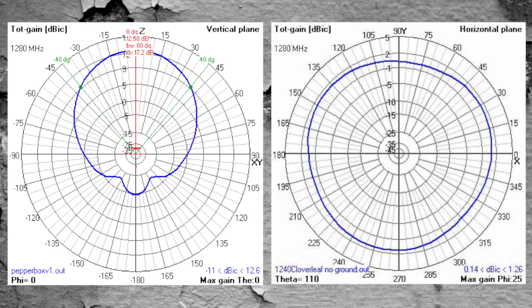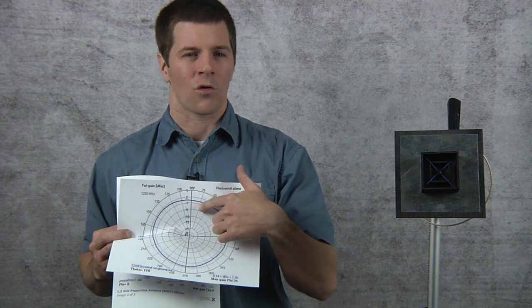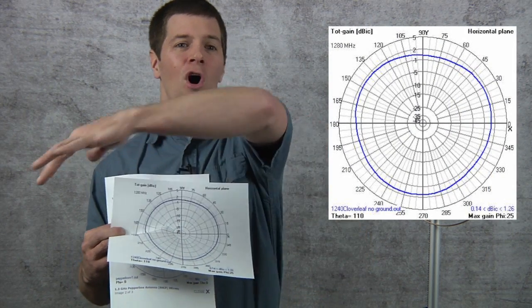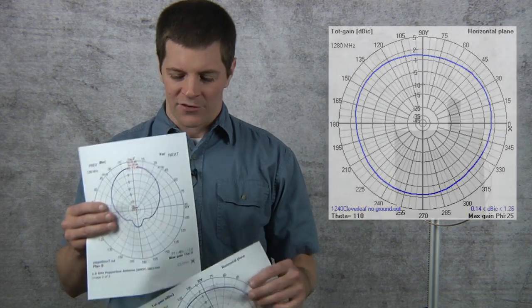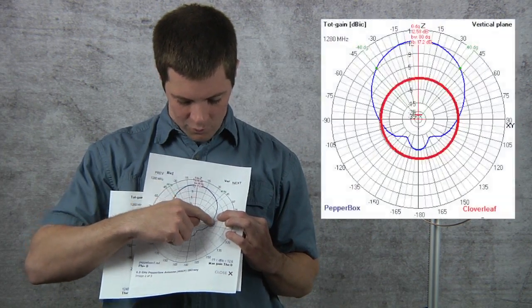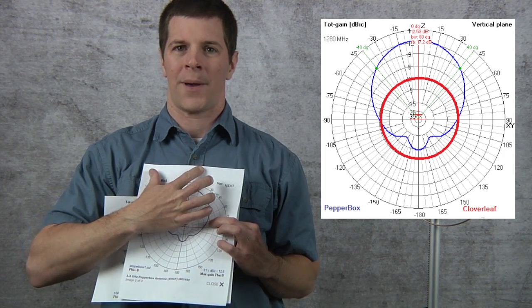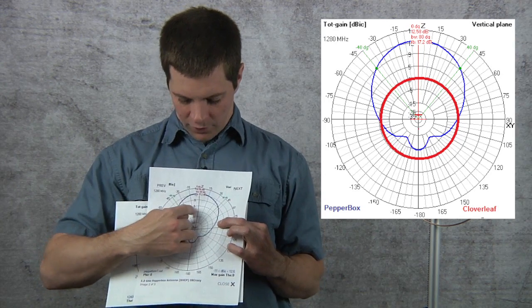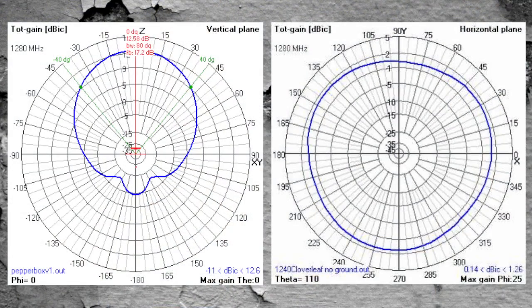Well, it does, but look at the scales. Look very carefully. You'll see here that the Cloverleaf, the gain is about one and a quarter to one and a half dBi. That's this ring right here. But it covers all around you. Well, what about the Pepperbox? Well, there's that one dBi ring right there. Notice the Pepperbox reaches way out past that.